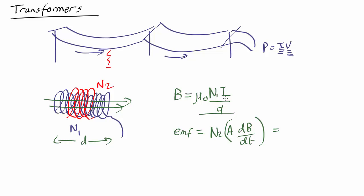Which, if you plug the equation for magnetic field into here, that comes out as N2 times the area, that's the cross-sectional area of the inside of the solenoids, times mu0 N1 over D, times the rate of change of the current. So that's the voltage you're getting out of the second red coil.